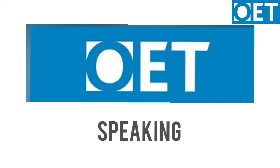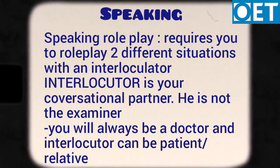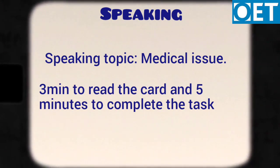OET subtest speaking requires you to role play two different situations with an interlocutor who is your conversational partner — not the examiner. Your conversation will be recorded and sent to the OET officials. In simple words, you will always be a doctor, and the interlocutor can be a patient or a patient's relative. The topic will be a patient's medical issue related to your profession. You will have three minutes to read the card before the conversation starts, and you can write on it or underline important points. After three minutes, a five-minute countdown begins for the conversation.